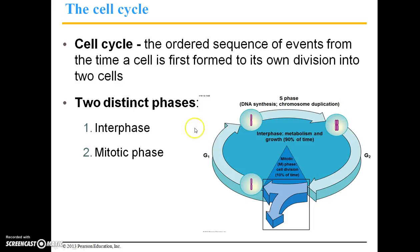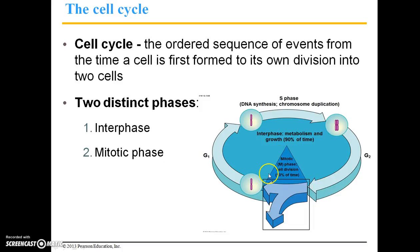Interphase is made up of G1 for GAP1, S phase which stands for synthesis when chromosomes are duplicated — here we have a single chromosome, and during S phase it undergoes duplication and becomes two sister chromatids — and G2 is the GAP2 phase. Then the mitotic or M phase is when cell division actually occurs, and this is only about 10% of the time for a typical cell.